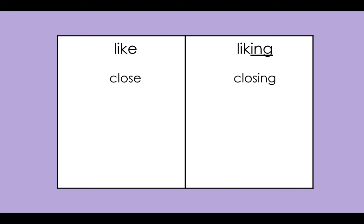Let's do another one. Are you ready? "Shine." Which side of the chart does the word "shine" belong? You're right — it belongs on this side under "like," because they both have the silent E at the end. Write the word "shine" under "close." Say it slow and smooth to hear all the sounds: shine. Check it — make sure your word looks like my word. Your word should have an E at the end to make it look right, like it would in a book. Shine.